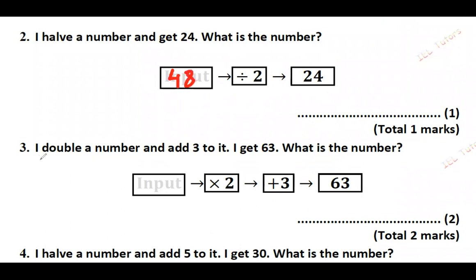Let's try question number three. It says I double a number and add 3 to it. I get 63. What's the number? The input is multiplied by 2 and then 3 is added, and then we get 63. Going backwards we have to subtract 3 first. Then instead of multiplying by 2, using the inverse operation we divide by 2. So starting with 63, subtract 3 gives 60, and 60 divided by 2 gives 30. So the number in the input is 30.